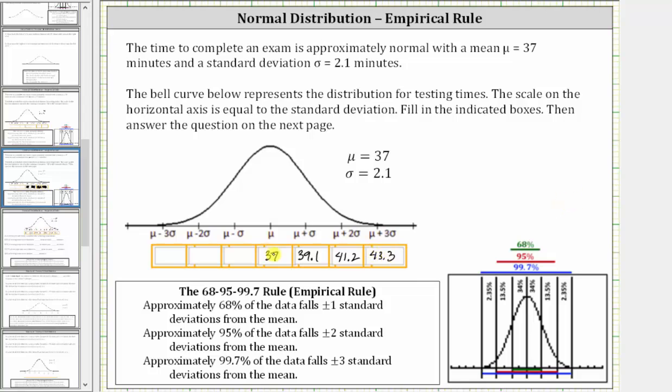And now to the left of the mean, mu minus sigma is equal to 37 minus 2.1, which is 34.9. Mu minus 2 sigma is equal to 34.9 minus 2.1, which is 32.8.